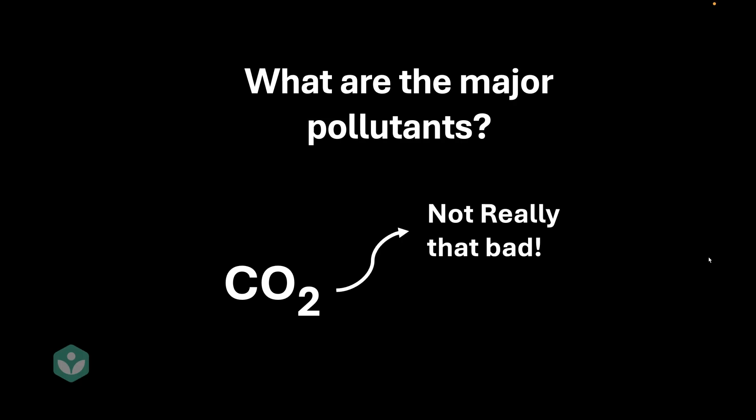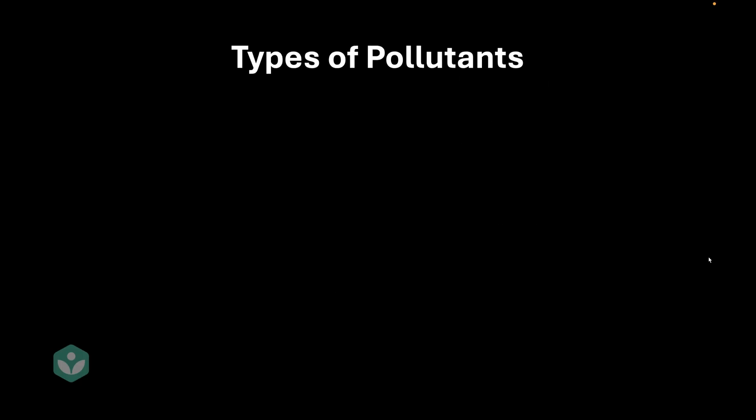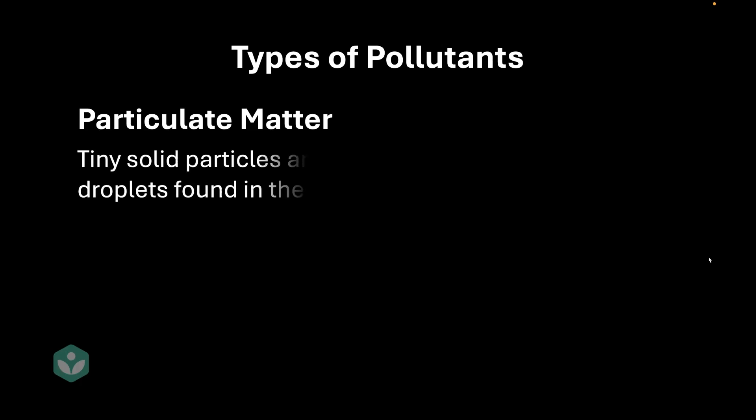So what are the different types of pollutants? Well, one type of pollutant is called particulate matter. These are very small particles, either solid or liquid, that are found in the air. You can think of this as tiny dust particles, though they're not always dust — they could be liquid as well.